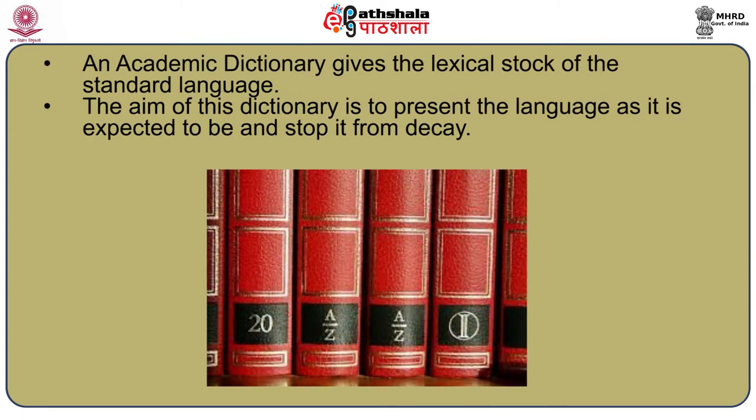General Dictionaries are of two types. One is the Academic or Normative Dictionary. The other is the Referential or Descriptive Dictionary. An Academic Dictionary gives the lexical stock of the standard language. The aim of this dictionary is to present the language as it is expected to be and stop it from decay. It has an eye on the future usage of the language.